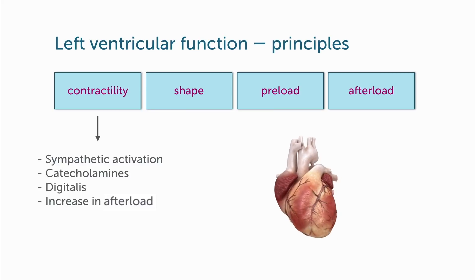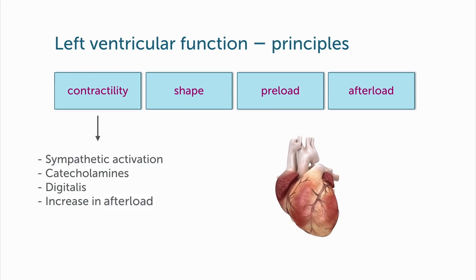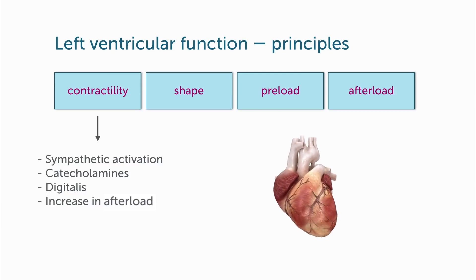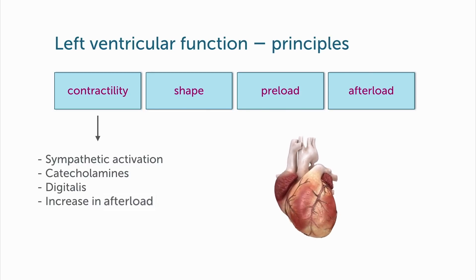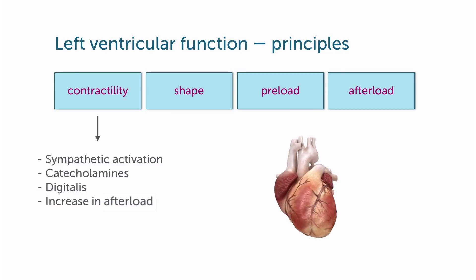A number of factors affect contractility. The sympathetic tone — for example, if the patient is very nervous, they'll be hypercontractile, which you can see during echocardiography very frequently. The amount of catecholamines a patient has — think of patients in the intensive care unit who receive catecholamines — other drugs such as digitalis, and also an increase in afterload.